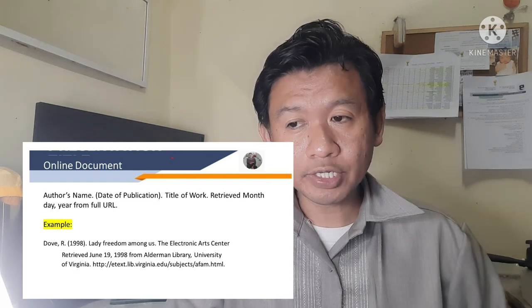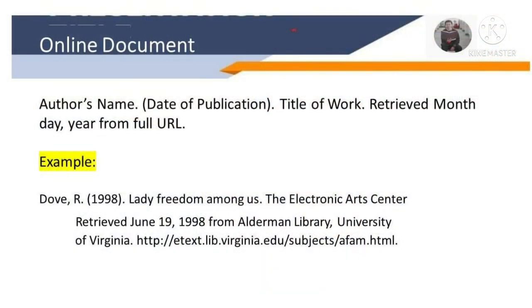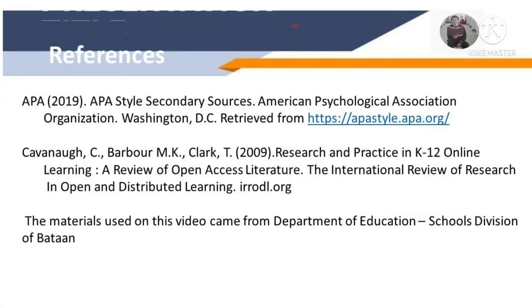For online documents, the pattern is: author's name, date of publication, title of work, retrieved month, day, year, from full URL. Example: Dove, R. (1998). Lady Freedom Among Us. The Electronic Arts Center. Retrieved June 19, 1998, from Alderman Library, University of Virginia [URL]. The materials used in this video came from the Department of Education, Schools Division of Bataan.